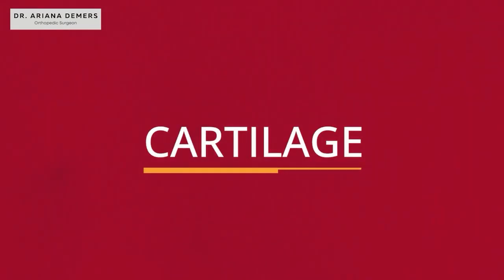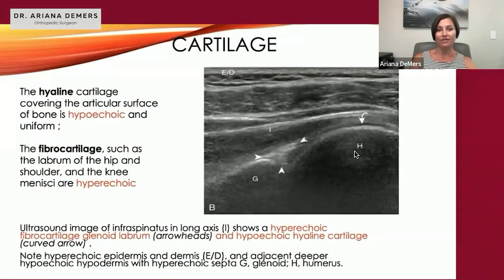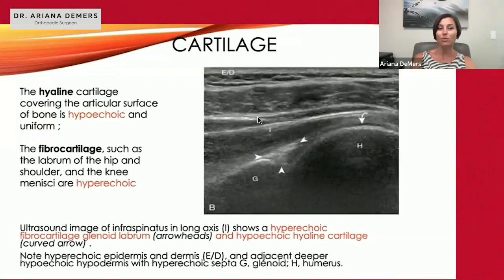Next is cartilage. There are two types: hyaline cartilage, which is hypoechoic, and fibrocartilage, like the labrum, which is hyperechoic. This is a shoulder — this is the humerus — and the overlying dark stripe is the hyaline cartilage, which is hypoechoic. The labrum is the fibrocartilage and it's hyperechoic. You can also see the dermis and epidermis, and then hypoechoic septae or musculature below, viewed in cross-section rather than long axis.